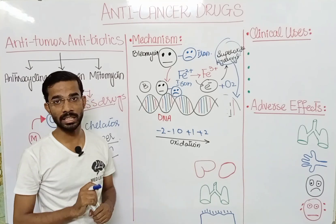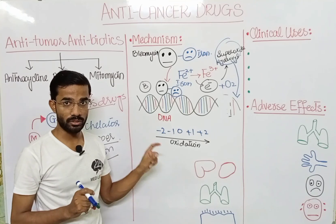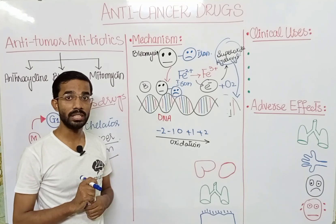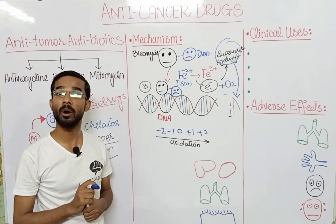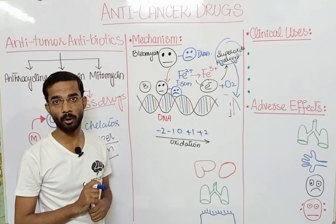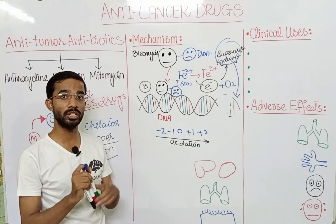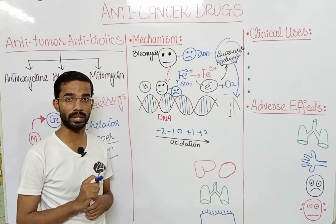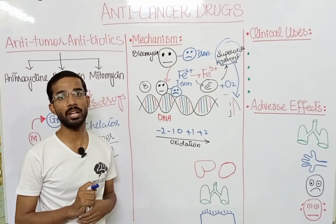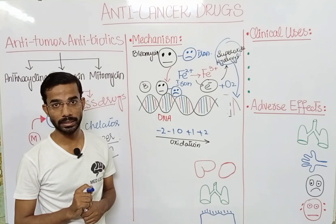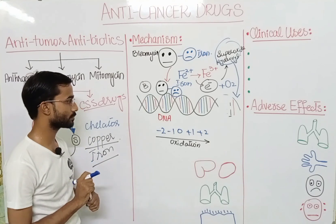Keep in mind that bleomycin also attacks the normal cells of our body, not specifically the tumor. It is not selective — normal cells will also be destroyed by bleomycin.